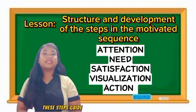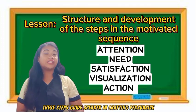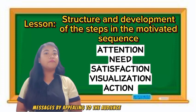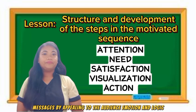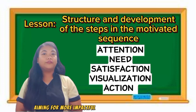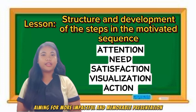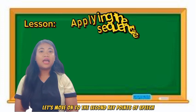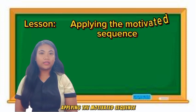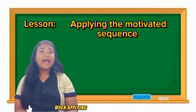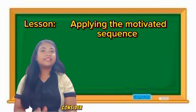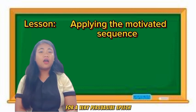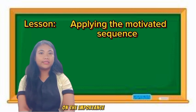These steps guide the speaker in crafting persuasive messages by appealing to the audience's emotion and logic, aiming for a more impactful and memorable presentation. Let's move on to the second key point of speech: applying the motivated sequence. When applying the motivated sequence, consider the following example for a persuasive speech on the importance of recycling.